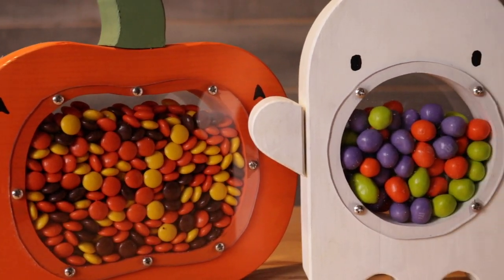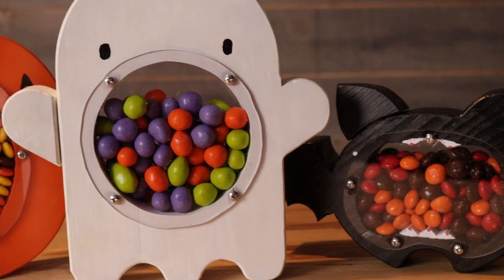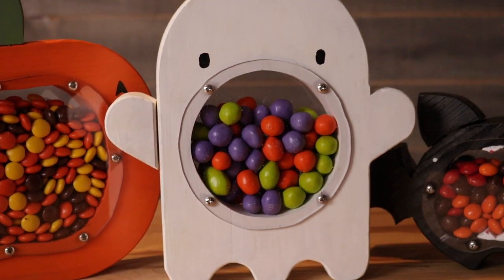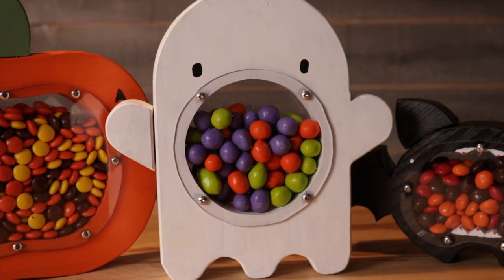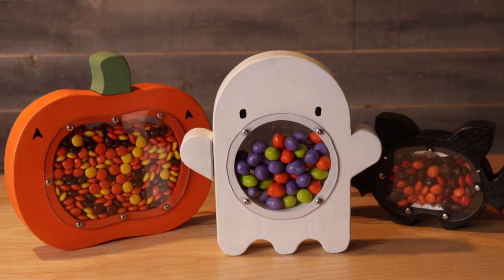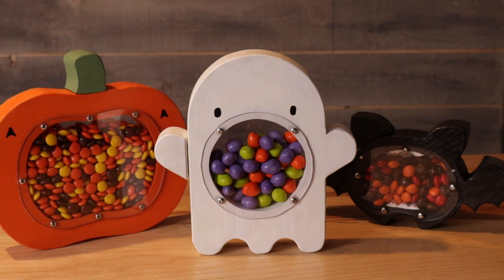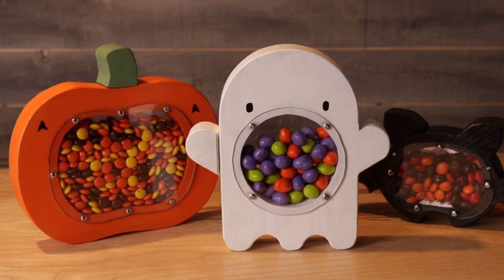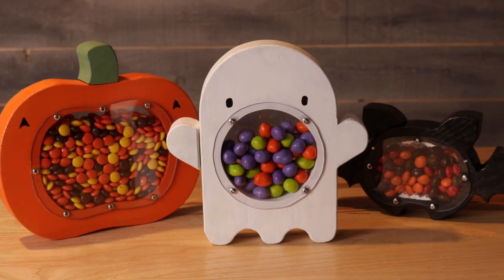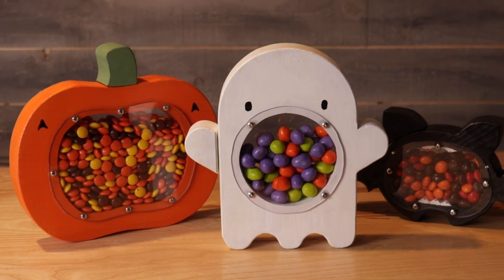And they're done. We've got the jack-o'-lantern, the ghost, and the bat. And if I were to turn off the lights the ghost would glow, but my camera isn't good enough to be able to pick it up so you'll just have to take my word for it. Hit like if you like this project and if you want to see more of the things that I make in my shop please subscribe. And like I said the plans for all three of these candy holders are available on my website, link will be in the description. Thanks for watching and we'll see you next time.